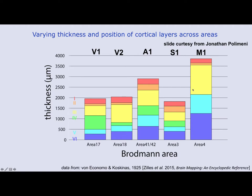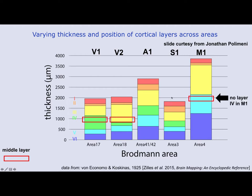It's important to note that every brain area has very different layer distributions. In a slide from Jonathan Polimeni, the position and thickness of layers 1 to 6 across primary visual, secondary visual, primary auditory, sensory, and primary motor cortex are summarized, and they are very different. For example, if you're interested in the middle layer: in primary visual cortex you would end up in feedforward layer 4, in secondary visual cortex V2 you would end up in feedback layer 3, and in motor cortex you would end up in layer 5. So you really need to know where you are in every specific brain area.